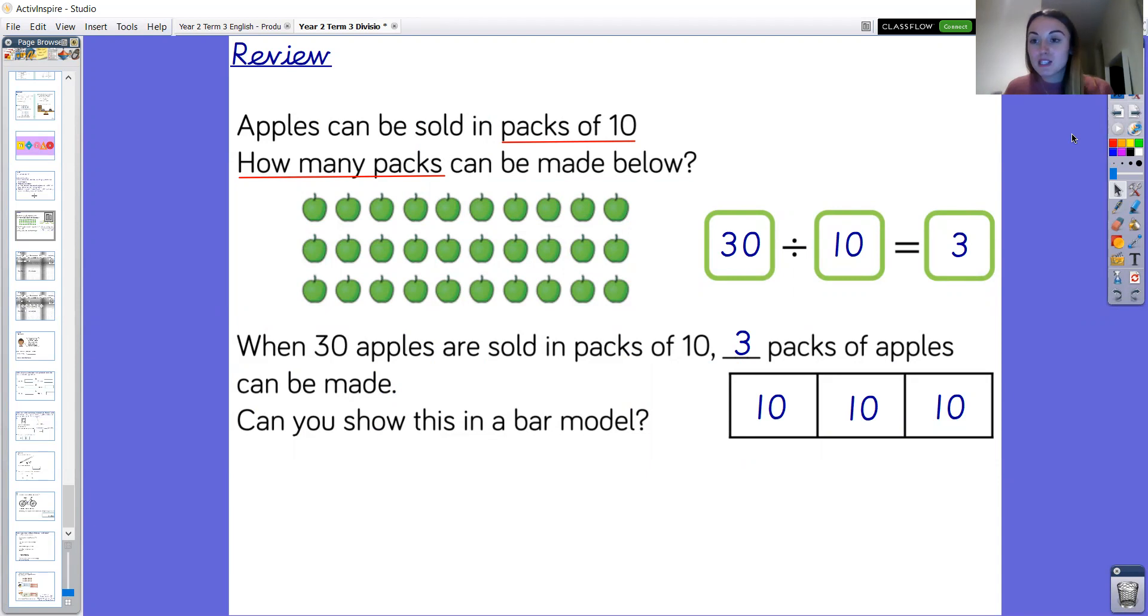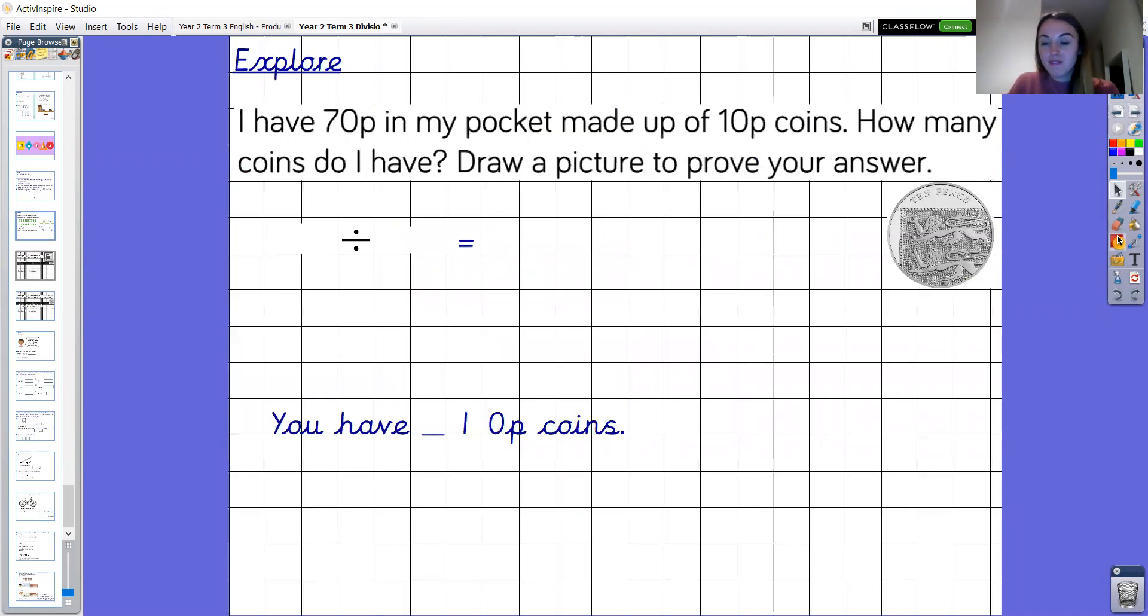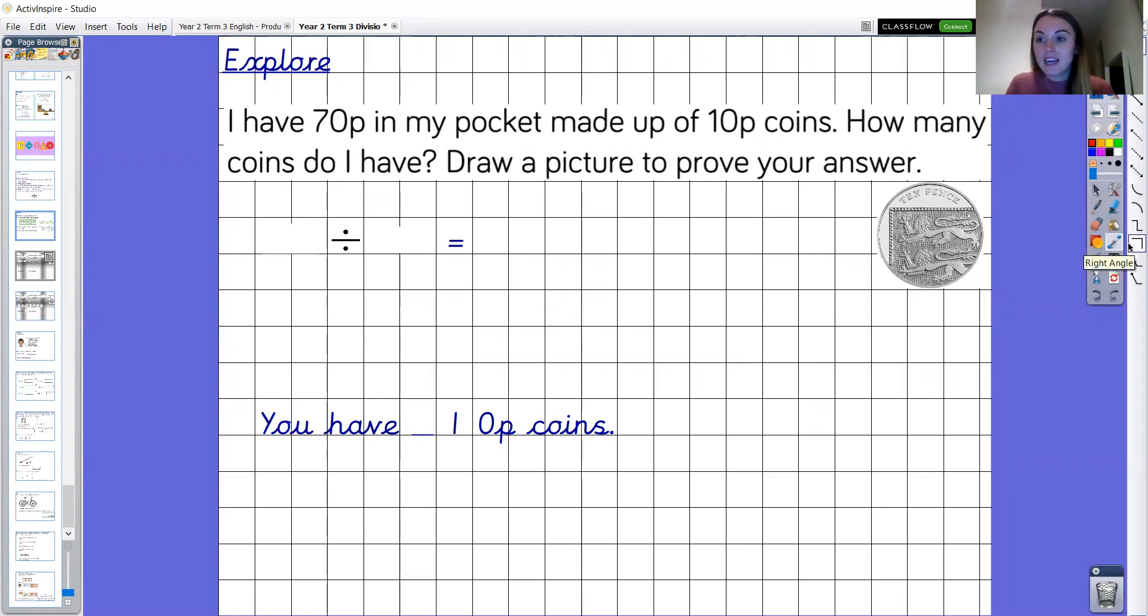Okay so today there's going to be a couple of explore questions before you move on to either the arithmetic or reasoning questions. Okay so our first explore question says I have 70p in my pocket made up of 10p coins. How many coins do I have? Draw a picture to prove your answer. So I'm going to highlight the key information as I read the question again so I'm really sure of what it's asking me.